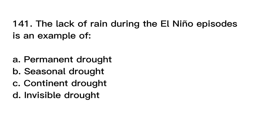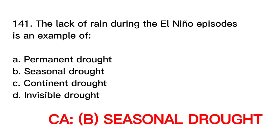The lack of rain during the El Niño episodes is an example of: A. Permanent drought. B. Seasonal drought. C. Continent drought. D. Invisible drought. Correct answer is letter B. Seasonal drought.